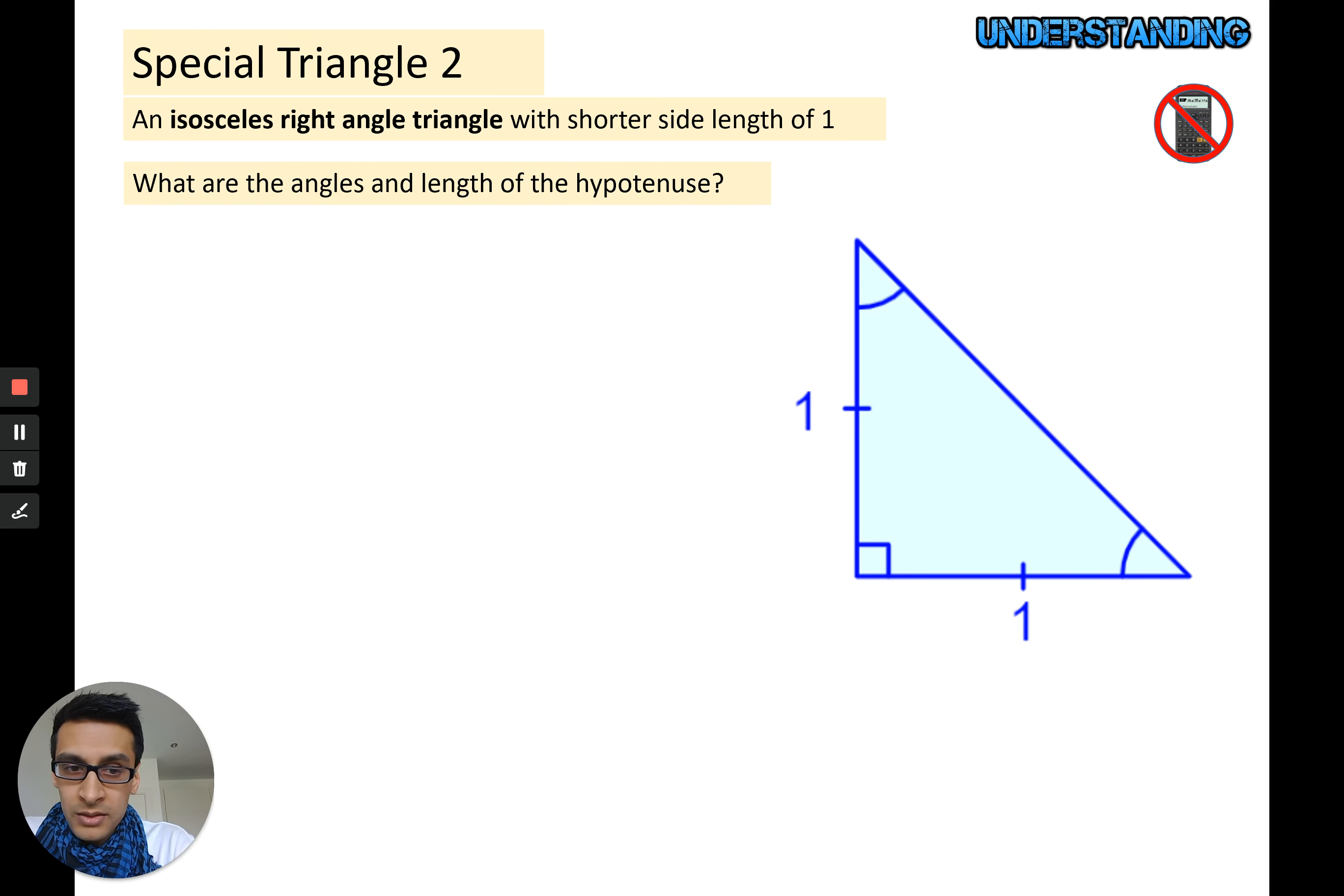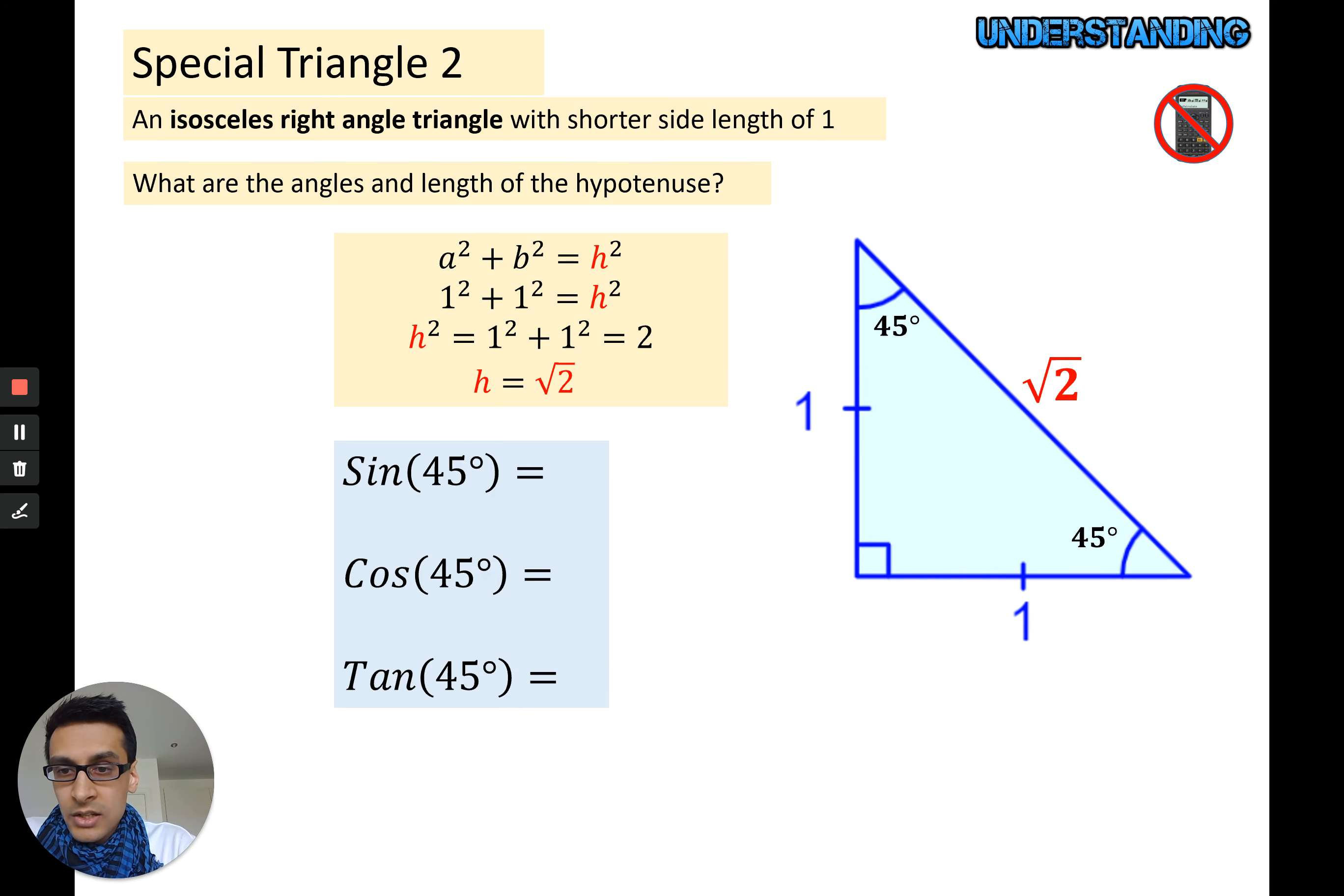What are the angles and the lengths? Well, the angles are obvious because it's an isosceles, so those two have to add up to 90, so there must be 45 each. The missing length we just use Pythagoras and you can see you end up with root 2. From that we can actually work out sine, cosine, and tan of 45.